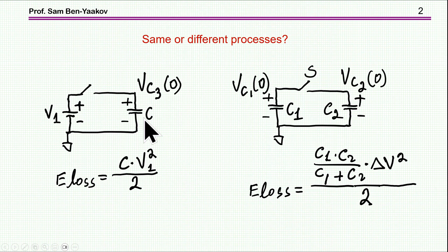I'm showing here two seemingly different charging or discharging processes. One is a voltage source charging or discharging a capacitor of any value. The capacitor could be either at zero voltage or charged to a given voltage. The other case has one capacitor charging or discharging another capacitor, each of any voltage value. These seem to be two different processes.